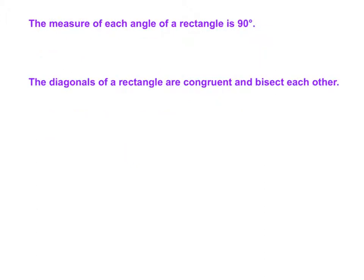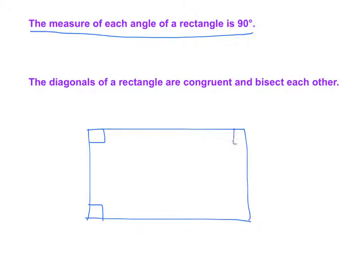Now we're going to move on and talk about rectangles. This conjecture might seem pretty clear. The measure of each angle of a rectangle is 90 degrees. We know that from our definition of a rectangle. They have four right angles.